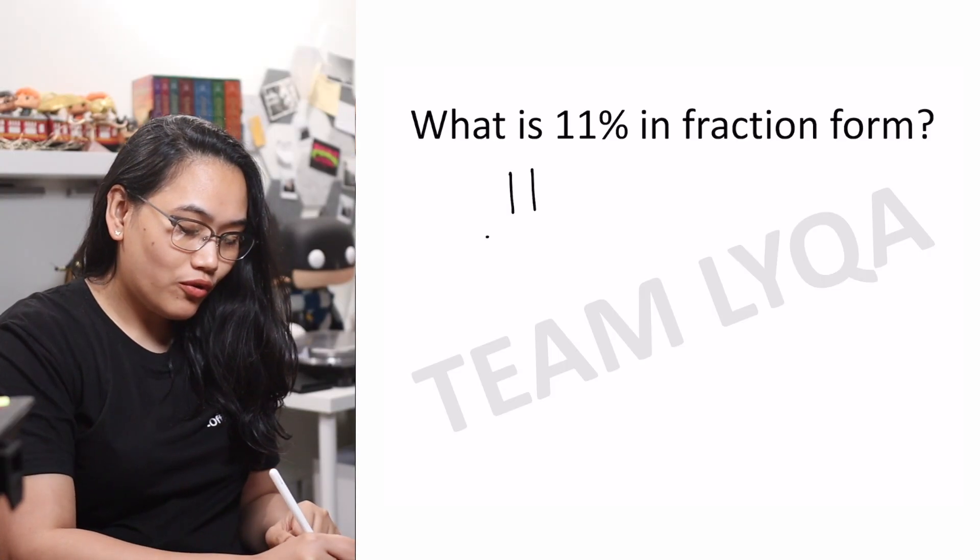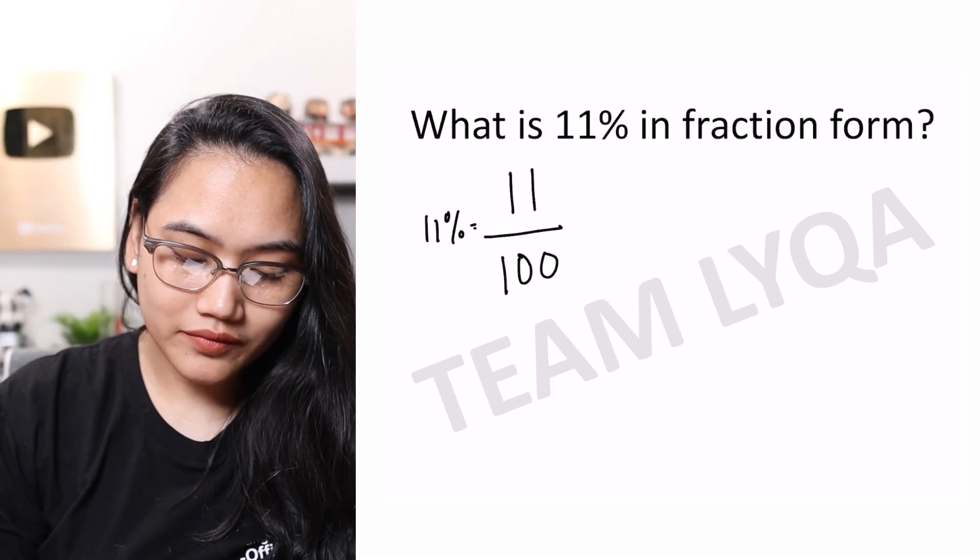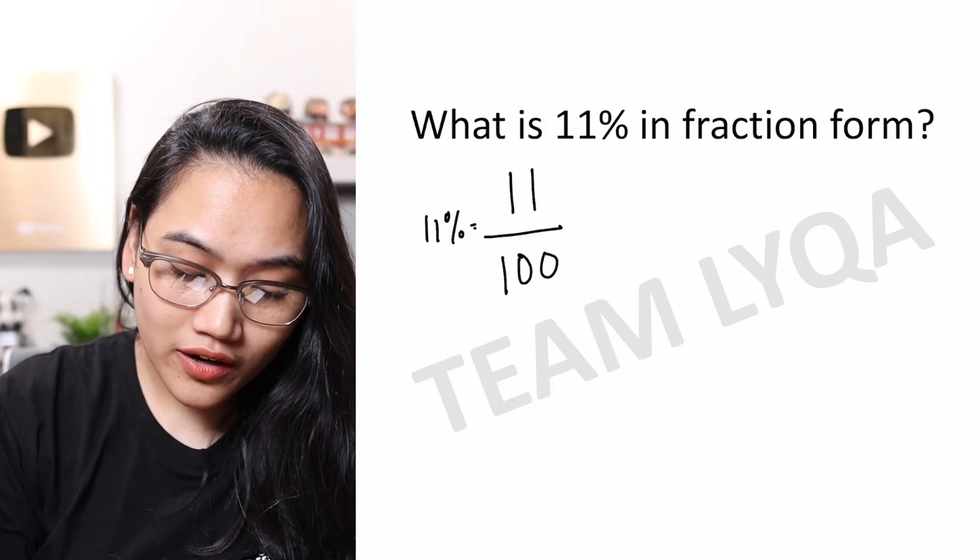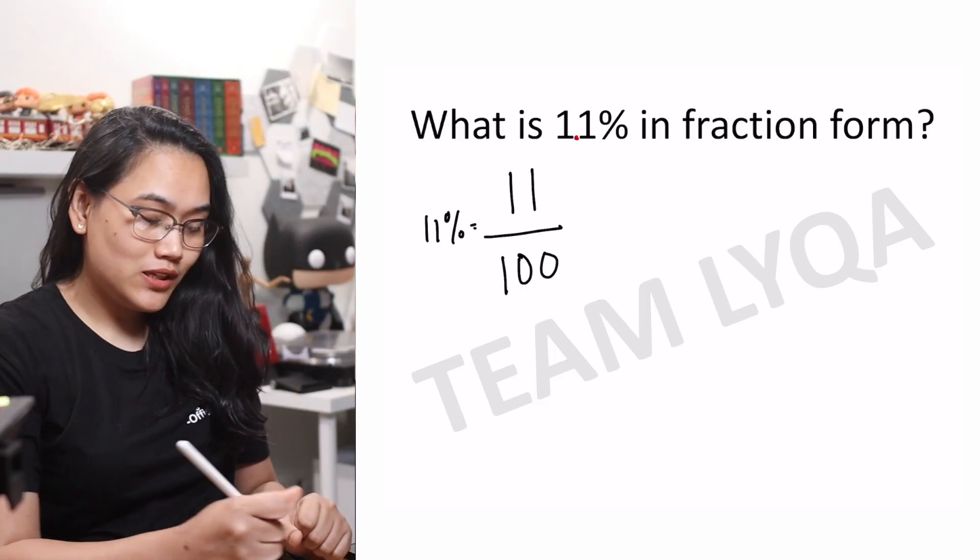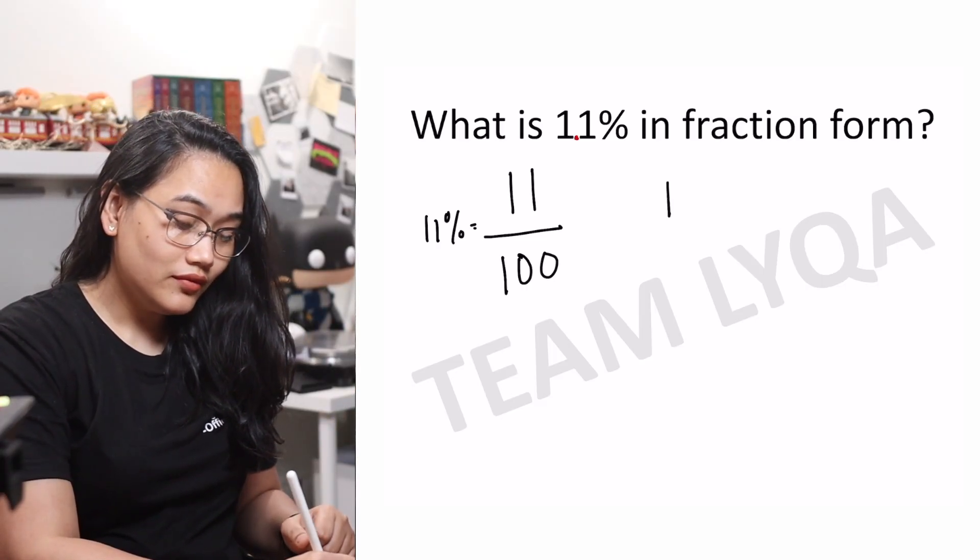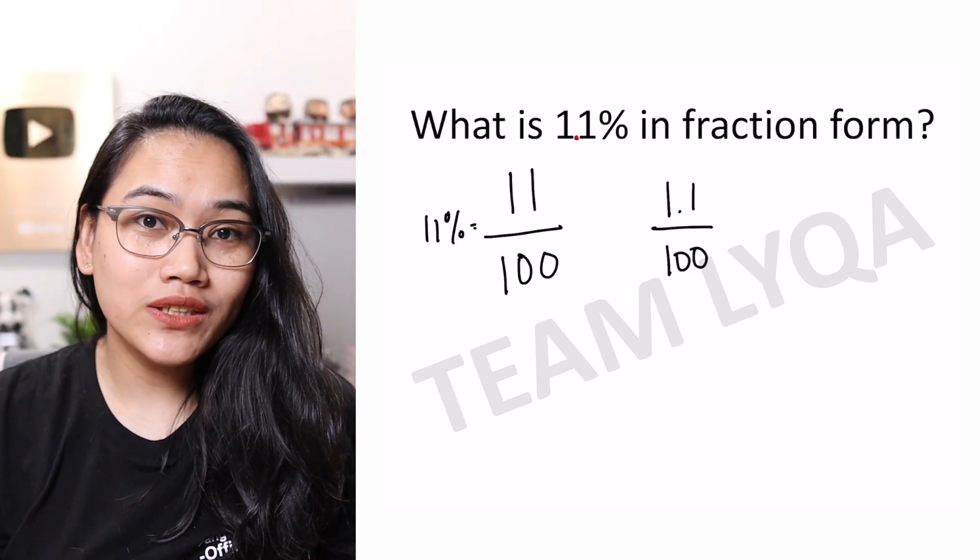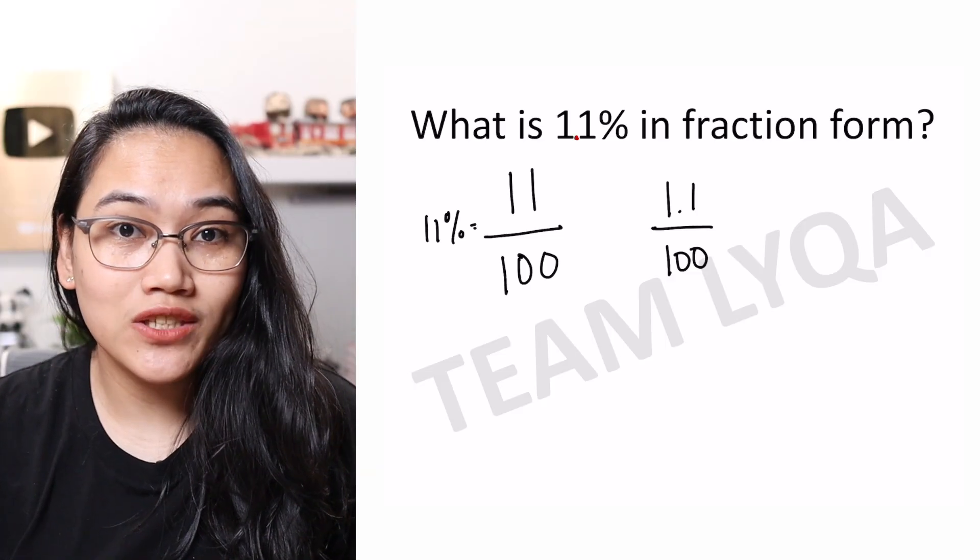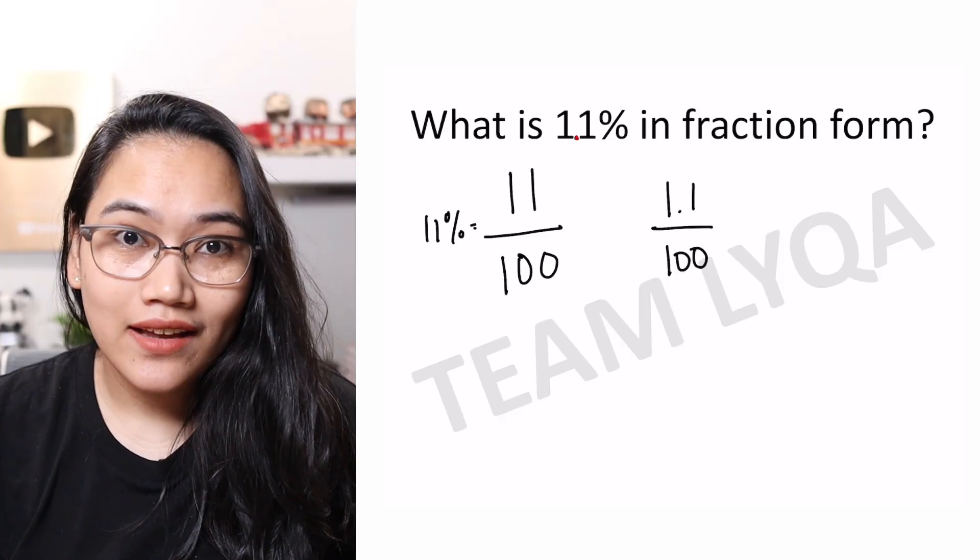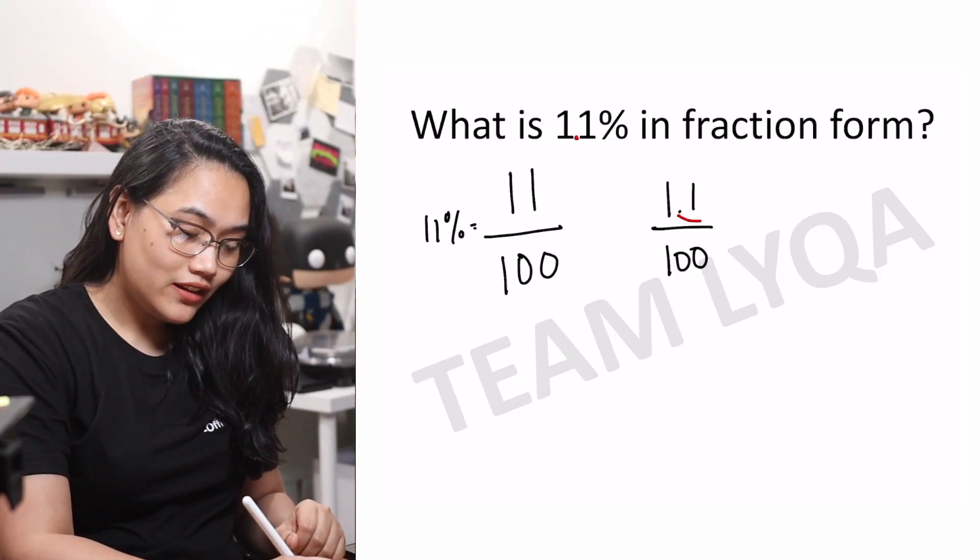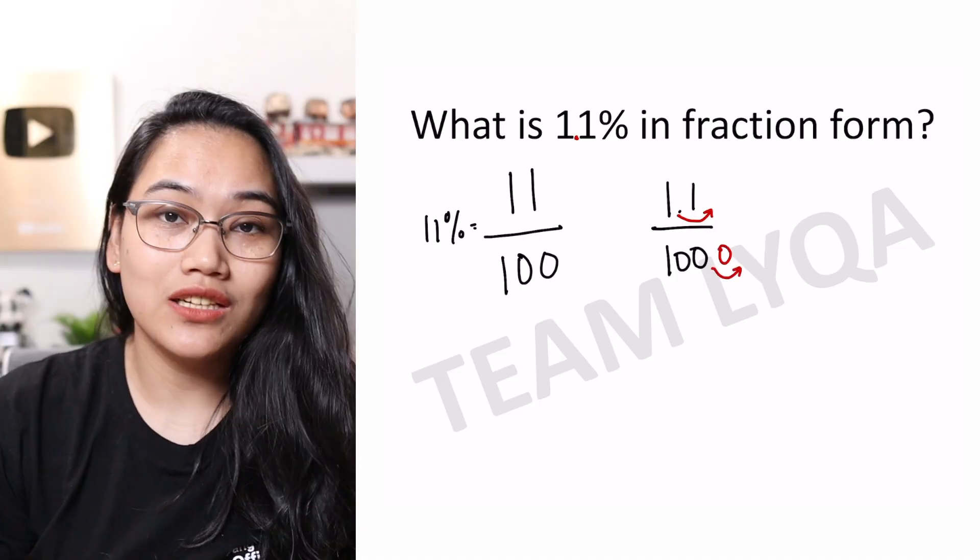We can write it as 11 over 100. Now, this is 11%. How about 1.1%? Following the same principle, 1.1% will be 1.1 over 100. But one of our rules when writing fractions is that there's no decimal on top. Because of that, to remove that decimal, we move it one place to the right, which means we also move the bottom one place to the right, making it 1,000.